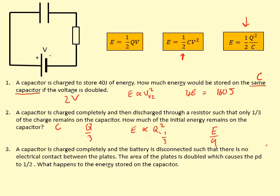In the last question, a capacitor is fully charged and the battery is disconnected so there is no electrical contact between the plates — meaning the charge is fixed and has nowhere to flow. The area of the plate is doubled, causing the potential difference to halve. Since Q is constant and V halves, using E = ½QV, the energy stored becomes half the original value.